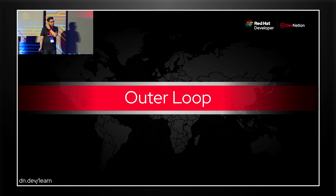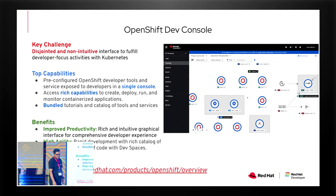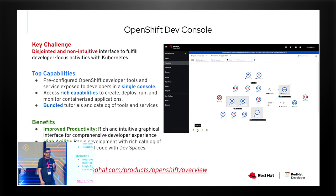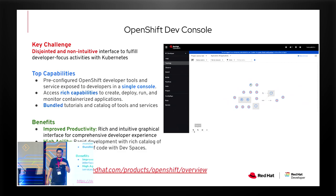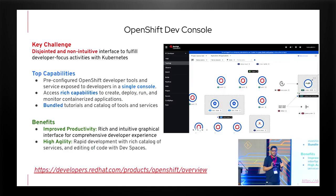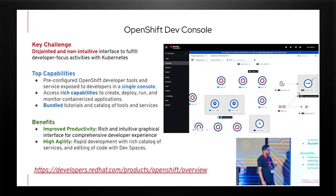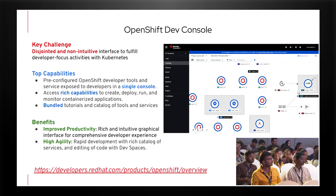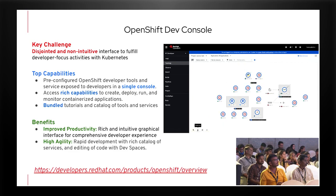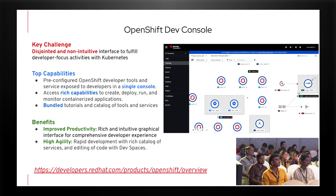That covers the inner loop. Now for the outer loop, the most important part is the developer console. It comes with pre-configured developer tools — it allows you to run operators, configure topology view, and enable observability. We are continuously improving this. It provides a great graphical interface to do everything at one point. You have two perspectives: the developer perspective and the admin console perspective. There are multiple getting-started guides so you always know what to do next — you just follow the guided workflow and everything works out of the box.